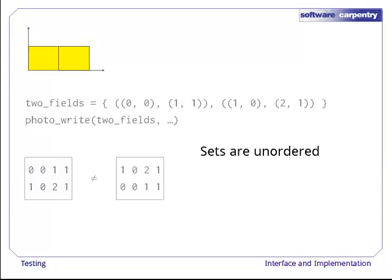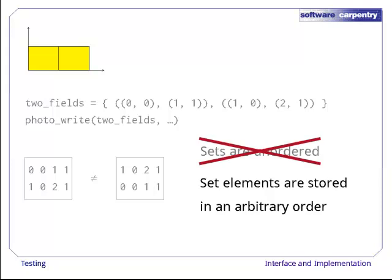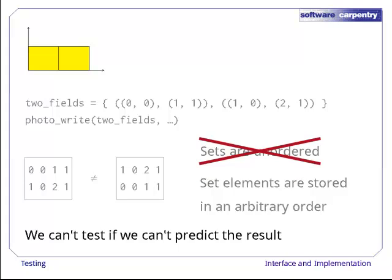The problem, of course, is that sets are unordered. Or rather, the elements in a set are stored in an arbitrary order that's under the computer's control. Since we don't know what that order is, we can't predict the output if we loop over the sets directly, which means we don't know what to compare the output to. If we sort the rectangles, on the other hand, they'll always be in the same order. And to sort them, we have to put them in a list first.